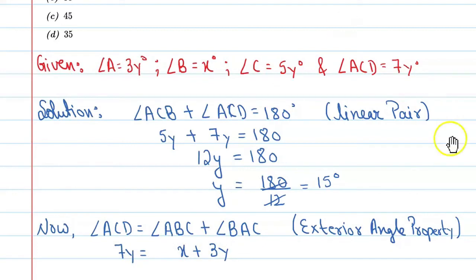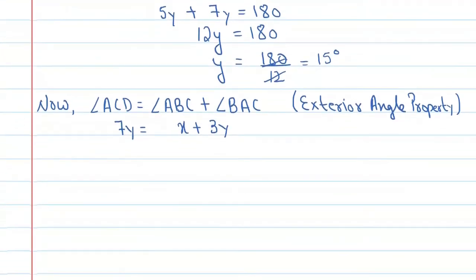So now 7Y minus 3Y equals X. So here you will get 4Y is equal to X. And what is the value of Y? Y is equal to 15. So put this value here, you will get 4 into 15 equal to X. So from there you can say that X is equal to 60 degrees.